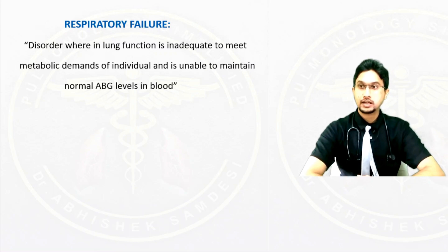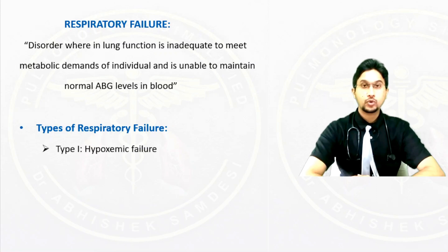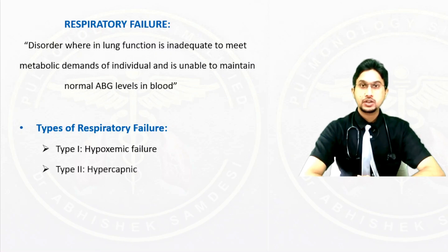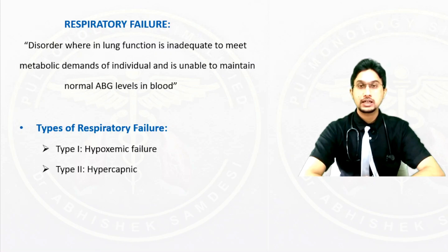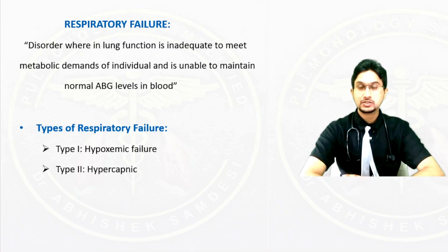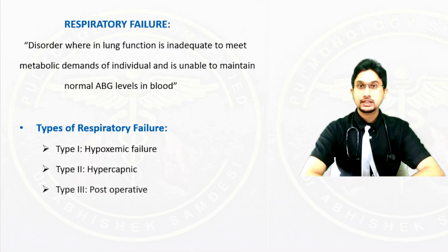There are four types of respiratory failure. Type 1 is hypoxemic failure, which will be discussed in detail. Type 2 is hypercapnic failure, caused by hypoventilation when carbon dioxide levels are more than 45 mmHg. In any ABG, if a patient has respiratory acidosis, it also means the patient has Type 2 respiratory failure. The mechanism, discussed in detail in the previous video, is hypoventilation.